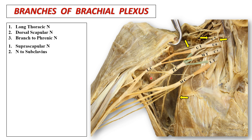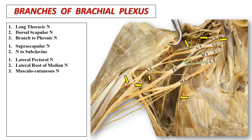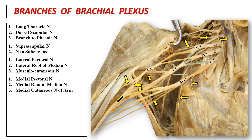Coming to the branches from the cords: the lateral cord gives rise to three branches — the lateral pectoral nerve, the lateral root of the median nerve, and the musculocutaneous nerve. The medial cord branches are five in number: the medial pectoral nerve; the medial root of the median nerve, which unites with the lateral root to form the median nerve; the medial cutaneous nerve of the arm; the medial cutaneous nerve of the forearm; and the ulnar nerve.